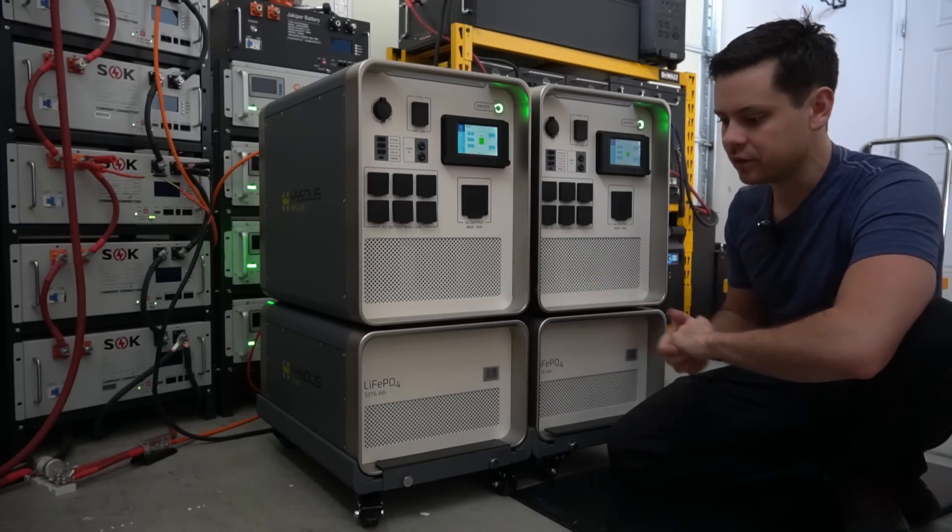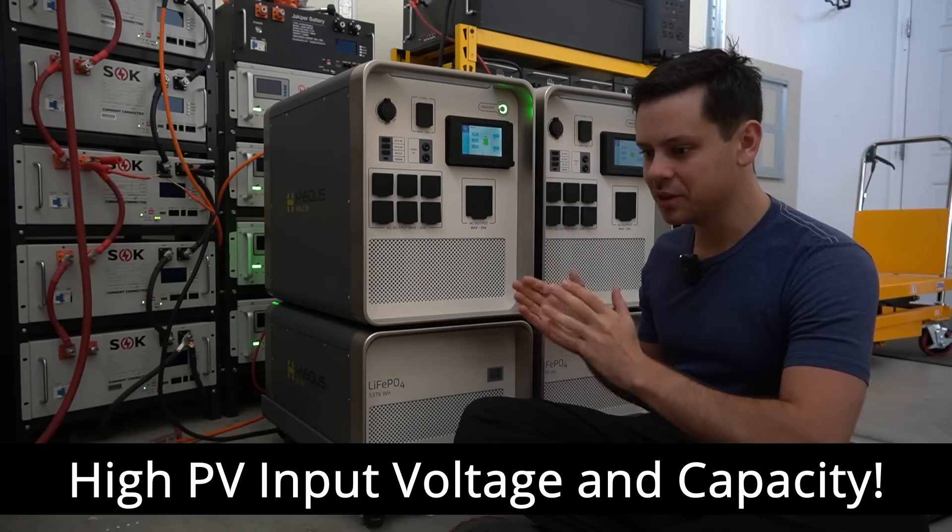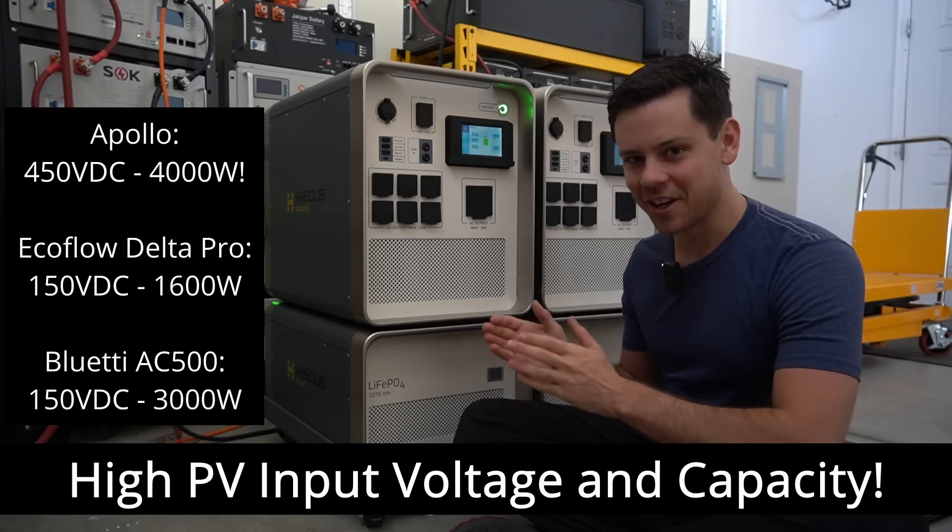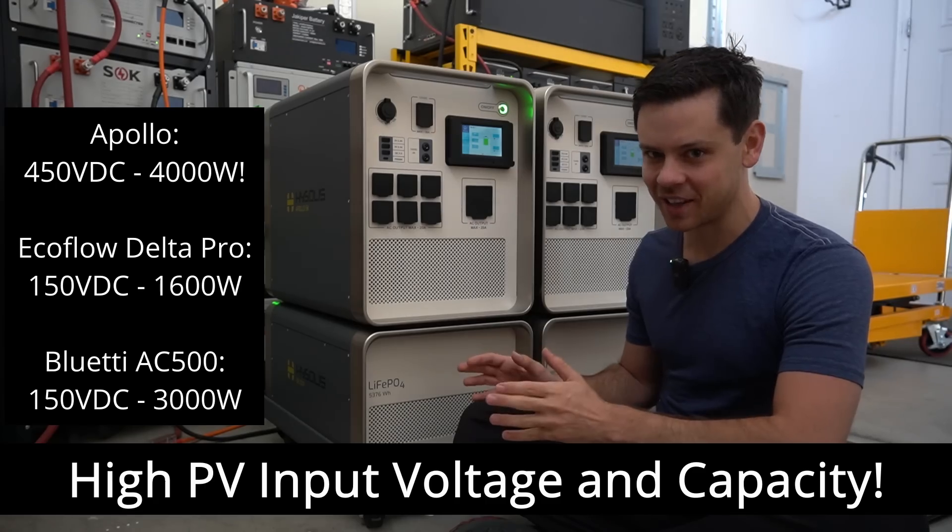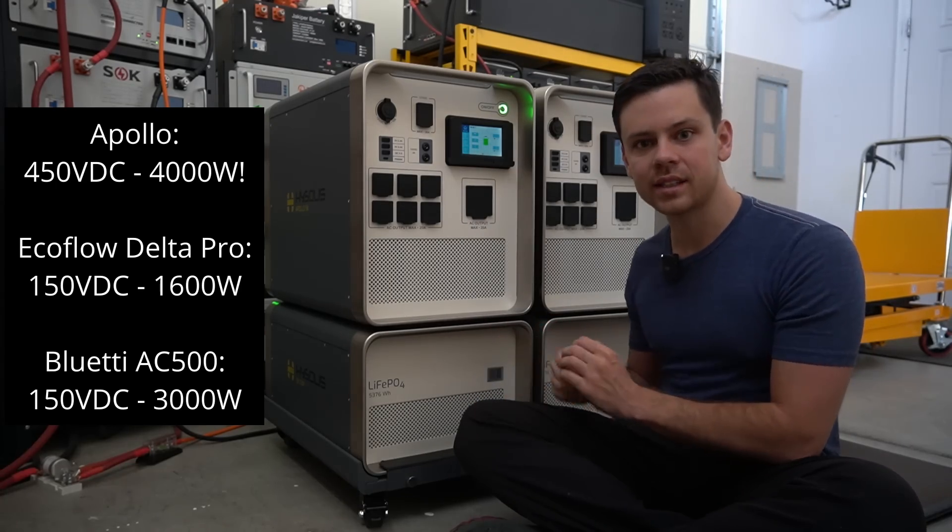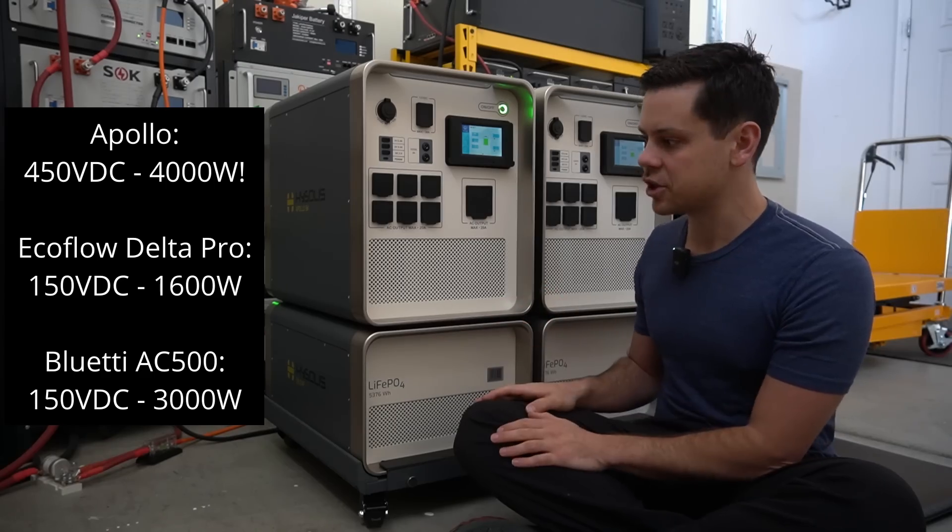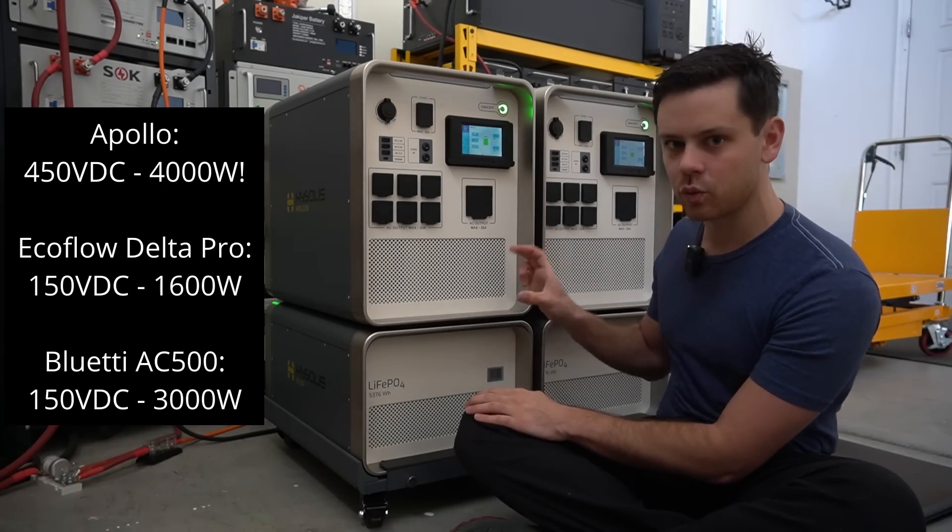Let's start with the special features first. The first special feature is the high input voltage. You can connect 4,000 watts of solar panels at 450 volts. There is no one else that even compares to that, which means you can now use a single series string of solar panels, which makes the installation much easier. Everybody should have been doing this from the start and they are the first ones to do that.